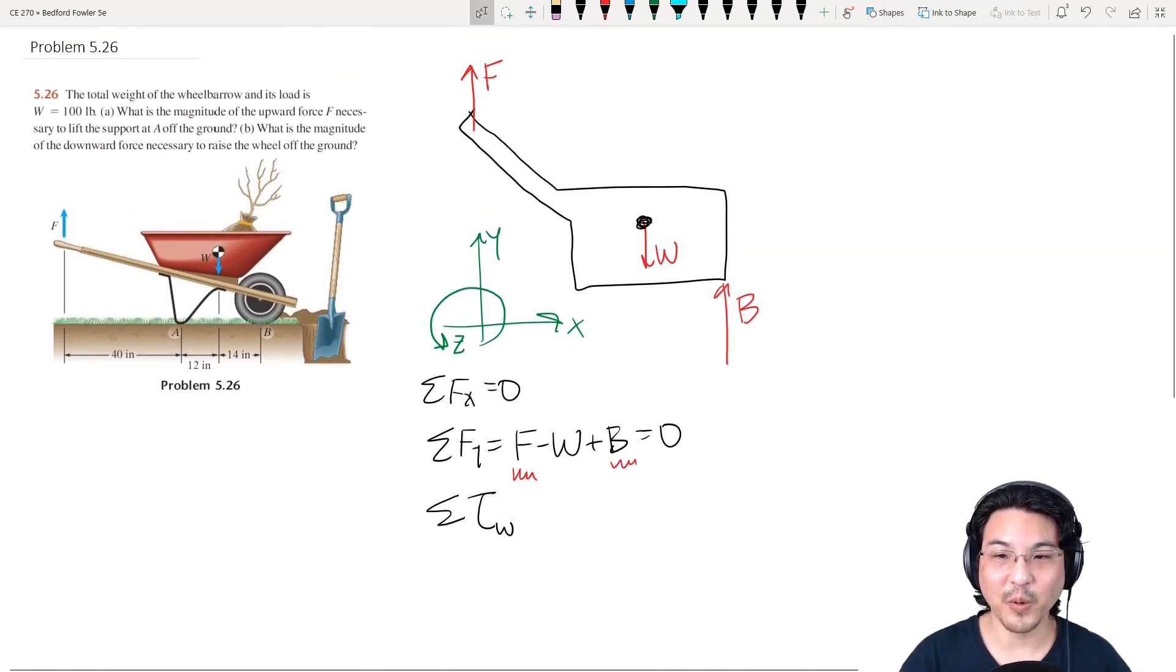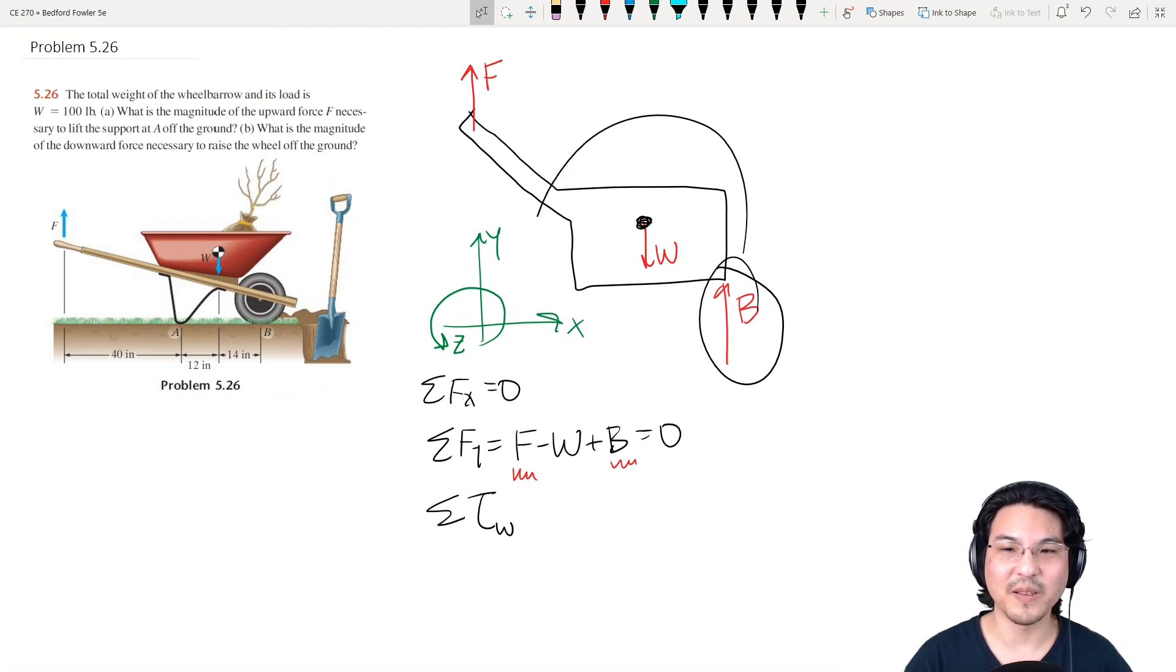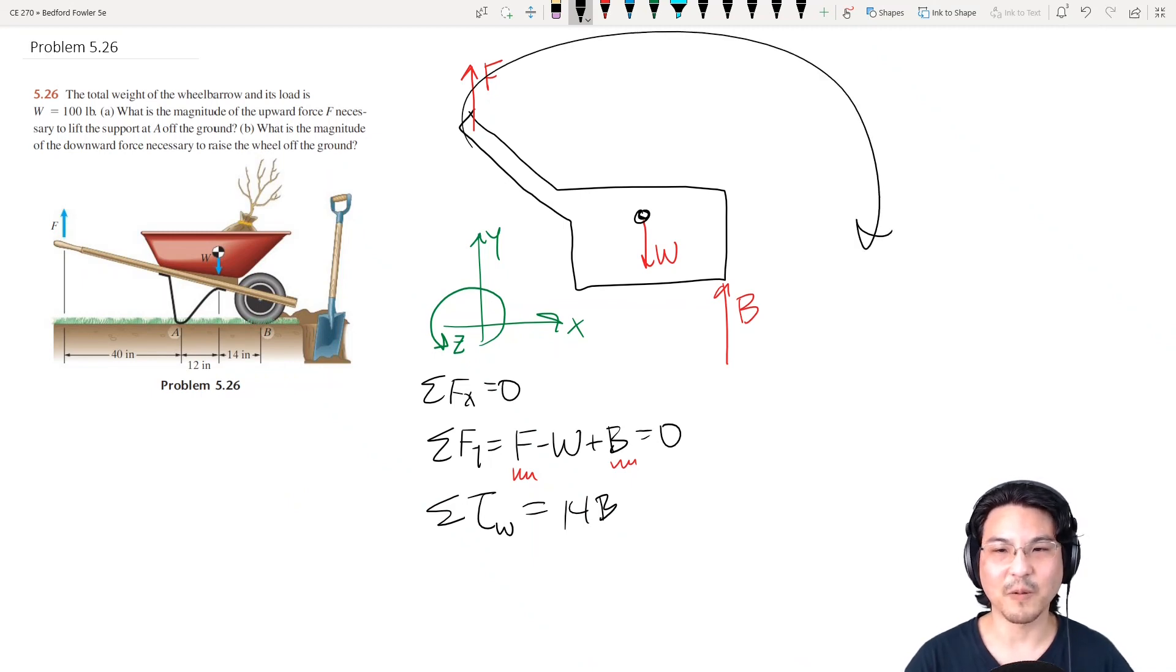Okay, so the torque about this point due to this force would be counterclockwise, which is positive. And here to here is 14. The torque about this point due to this force would be clockwise, which is negative. And here to here is 52.